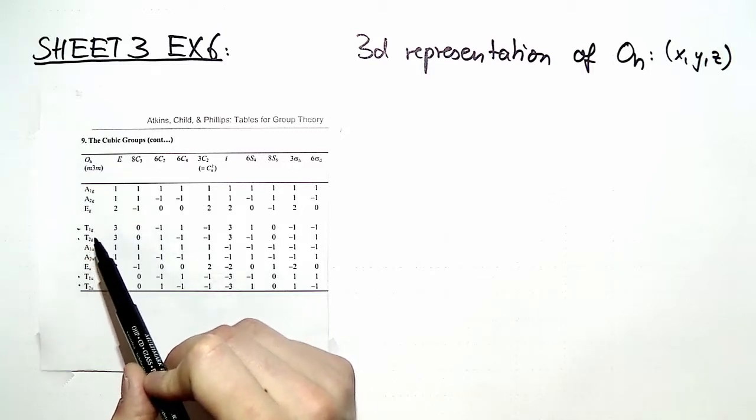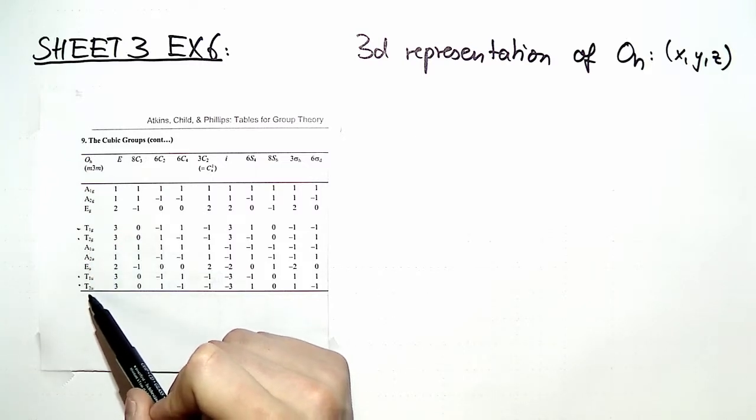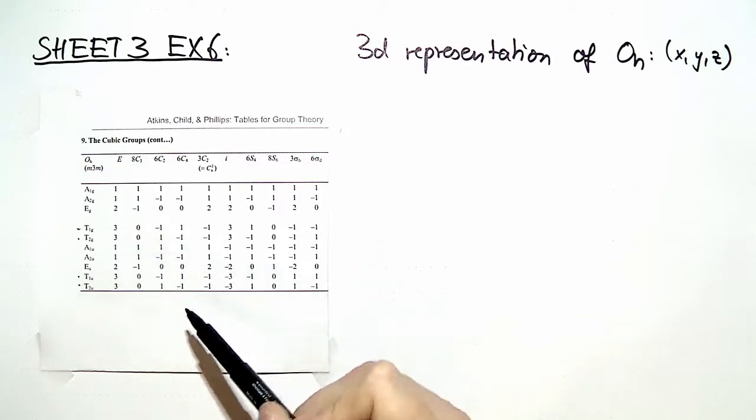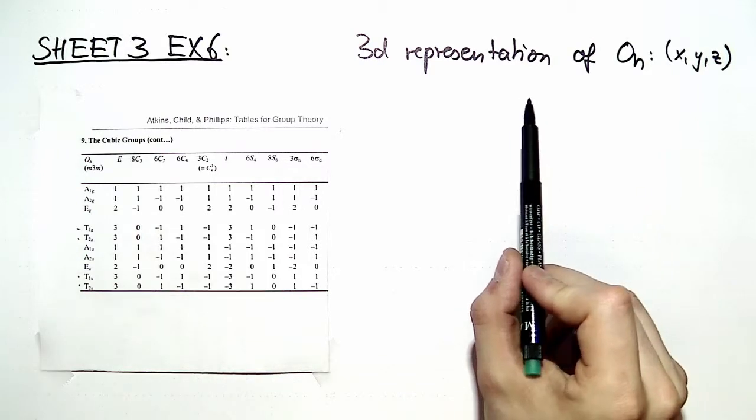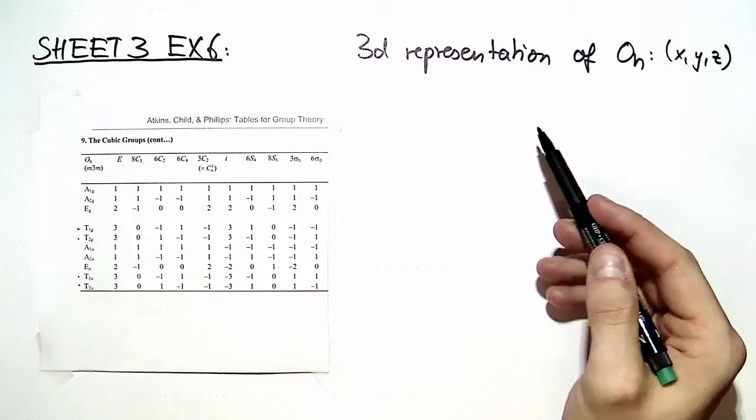This leaves us with four possibilities for representations: namely t1g, t2g, t1u, and t2u. So all we want to do is find out which of these four representations transform according to the representation given in the lecture, and we do that by computing the characters.